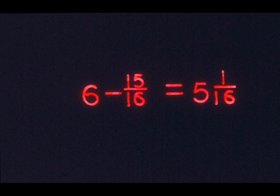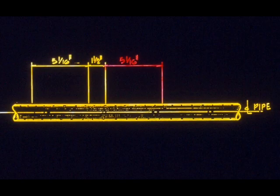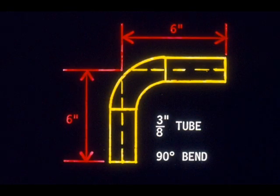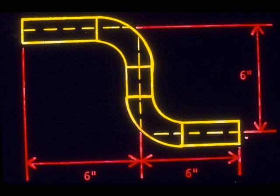Our final step is to determine how much tubing will be required on the final leg. The answer is the same as the first leg: six inches minus fifteen-sixteenths, or five and one-sixteenths. Remember that take-up is always subtracted from any leg that has a bend on one end of it. Therefore, you subtract fifteen-sixteenths from both the first leg and the second leg, since both legs must give up some length to the bend itself. If a leg has a bend on both ends, then you must subtract the take-up from both ends.